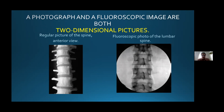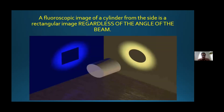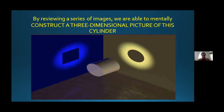A photograph and a fluoroscopy image are both two-dimensional pictures. We have a shadow — like an X-ray — and this shadow must show us the correct ratio and correct dimensions of our anatomy. A fluoroscopy image of a cylinder from the side is a rectangular image regardless of the angle of the beam, but by reviewing a series of images, we are able to mentally construct a three-dimensional picture of that cylinder.